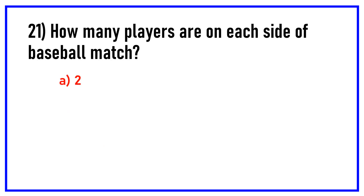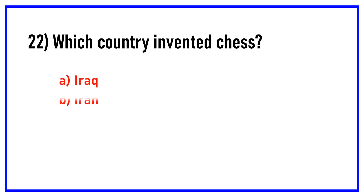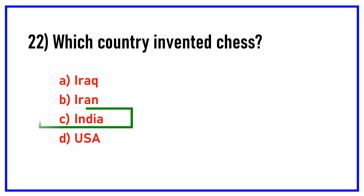How many players are on each side in a baseball match? Options are: 2, 5, 11, 13. Answer: 5. Which country invented chess? Options are: Iraq, Iran, India, USA. Answer: India.